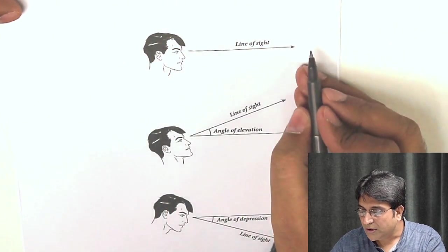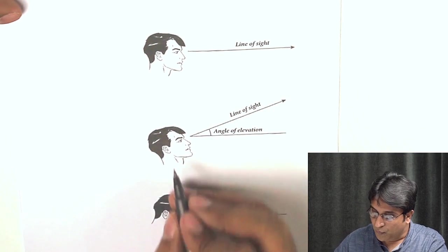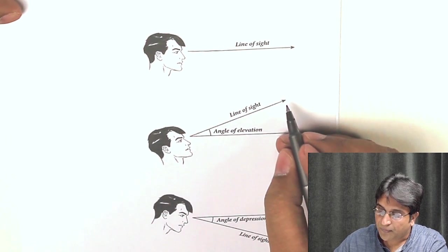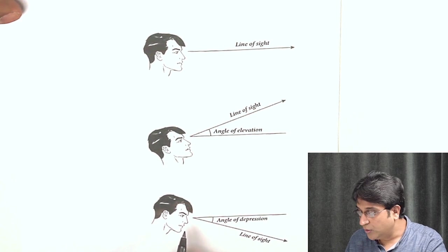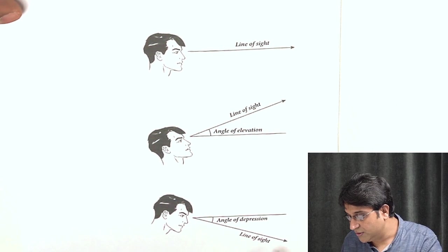So you are here and you're looking at something here. That'll be your line of sight. You are here and you're looking at something which is higher above. Then this is your line of sight. You are here and you're looking at something down below. Then this is your line of sight.